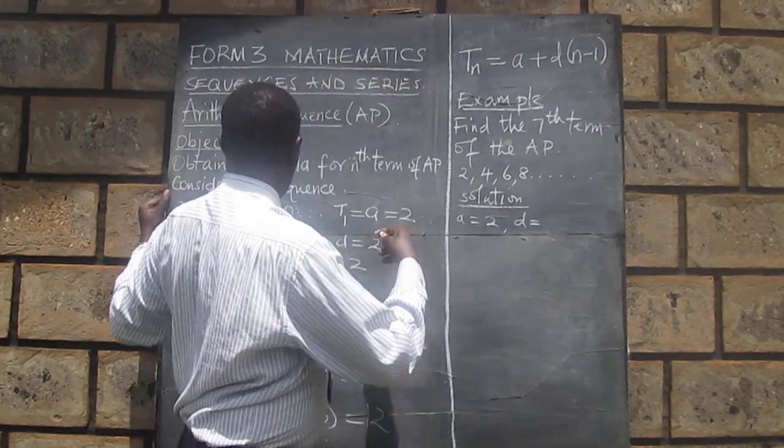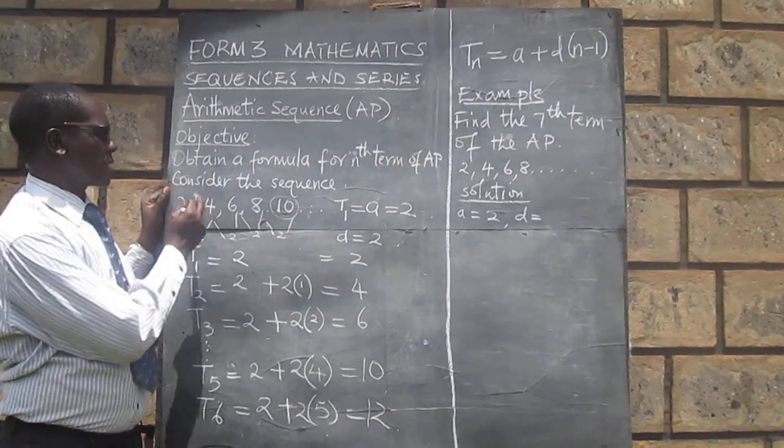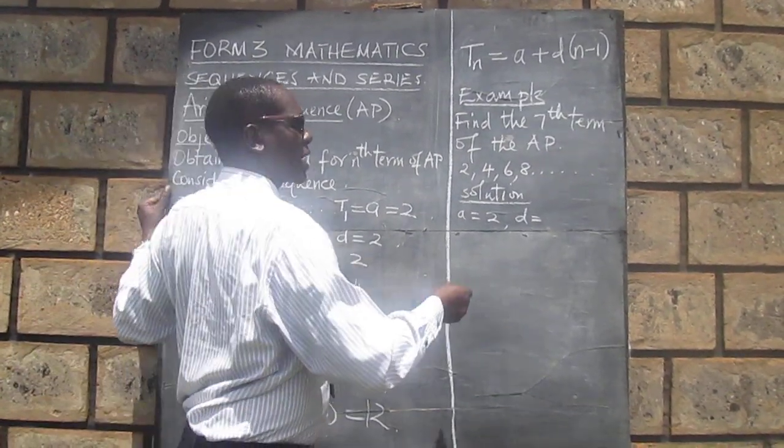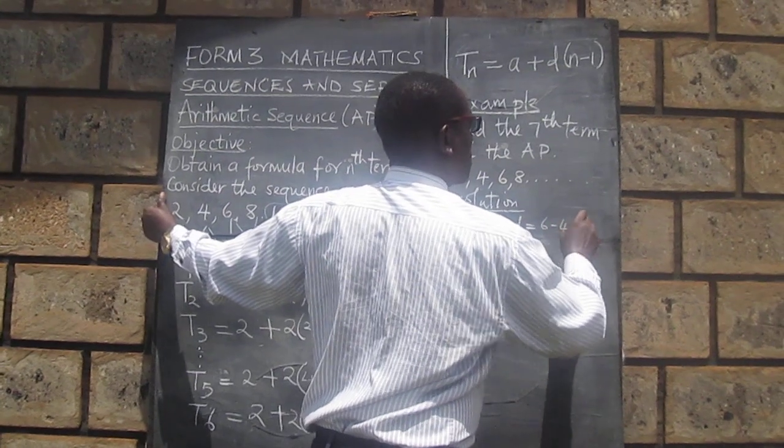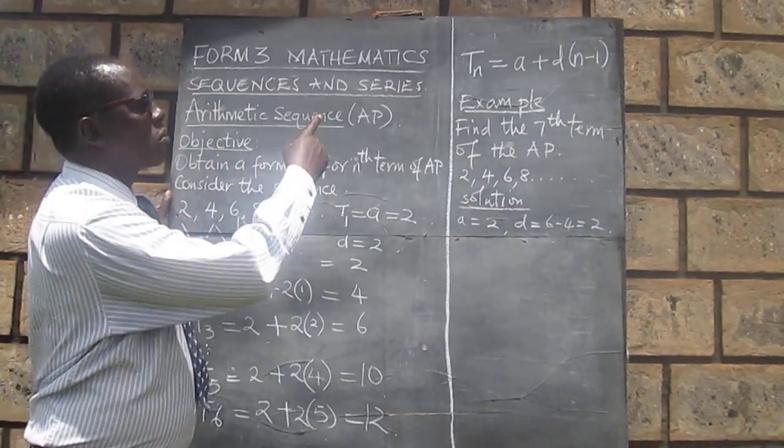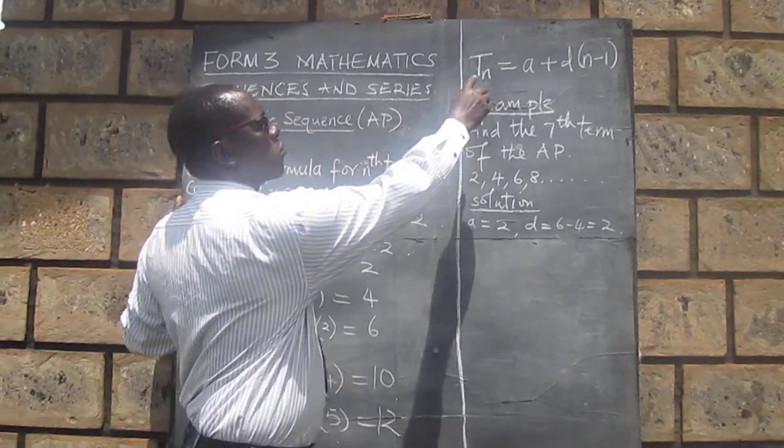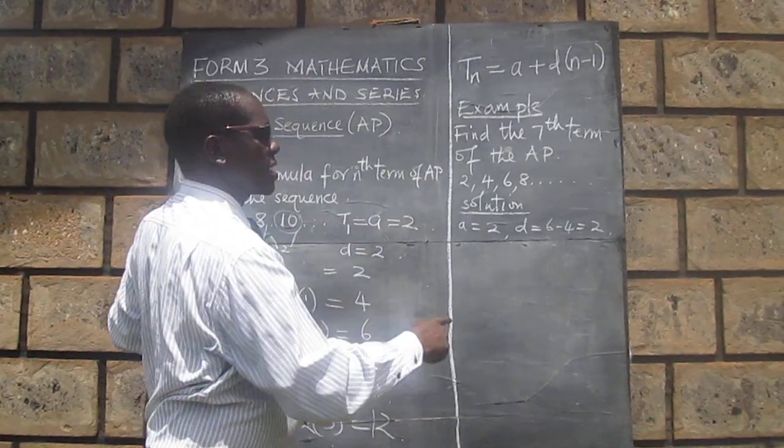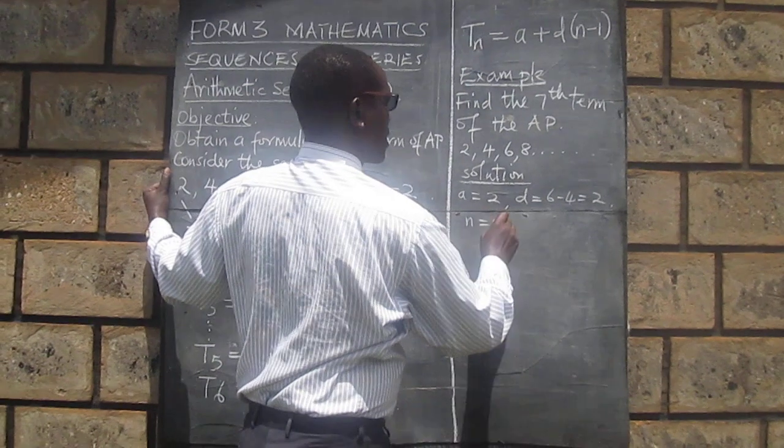And then we look for the term we are being asked for, which term? The 7. Therefore, N is 7. And all we need to do now is to substitute that in the formula.